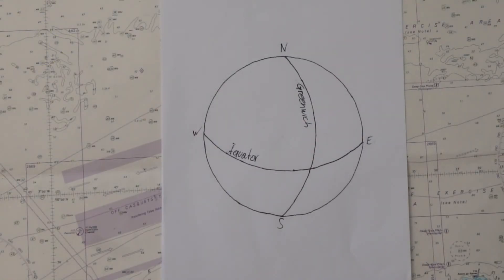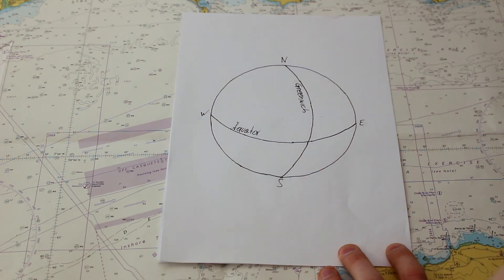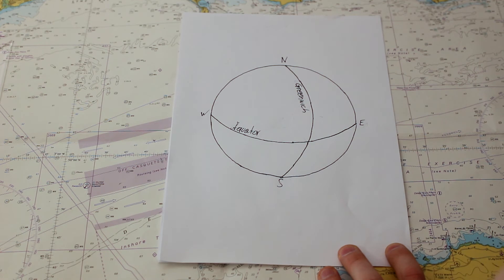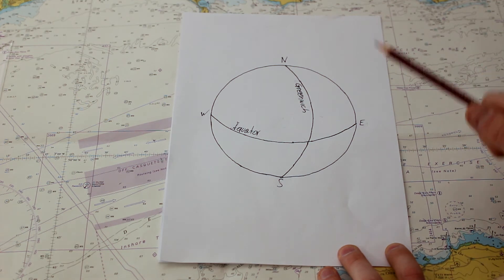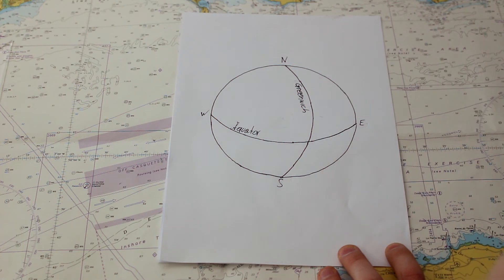Today is our first lesson of our navigation program and we start with the main basics. As you see, we start today with the coordinate system of the earth. This is our earth and everyone knows the North Pole and the South Pole and there is also something as an Eastern Hemisphere and a Western Hemisphere.